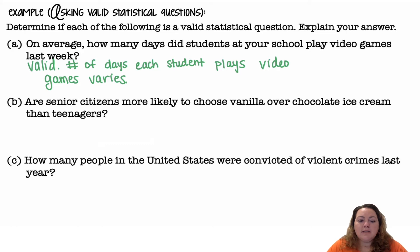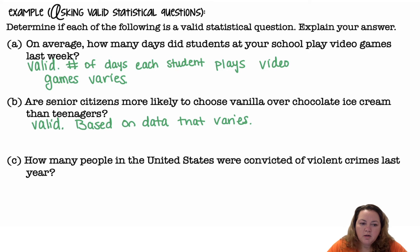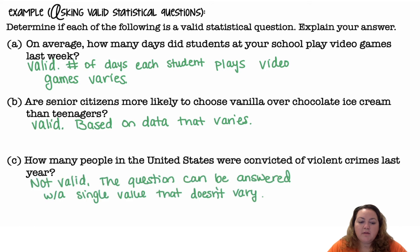Are senior citizens more likely to choose vanilla over chocolate ice cream than teenagers? Again, this is valid — it's based on data that varies. I could ask several senior citizens and several teenagers and I'm going to get varying results. Part C: how many people in the United States were convicted of violent crimes last year? This is not valid. The question can be answered with a single value that doesn't vary.